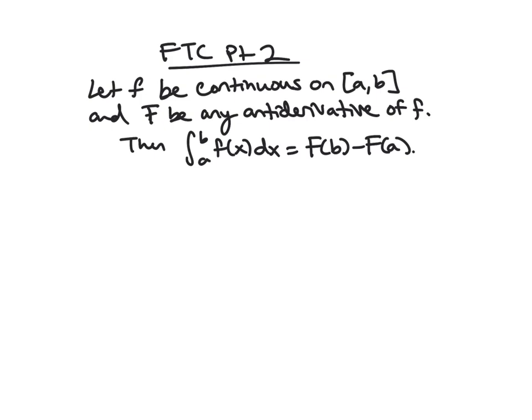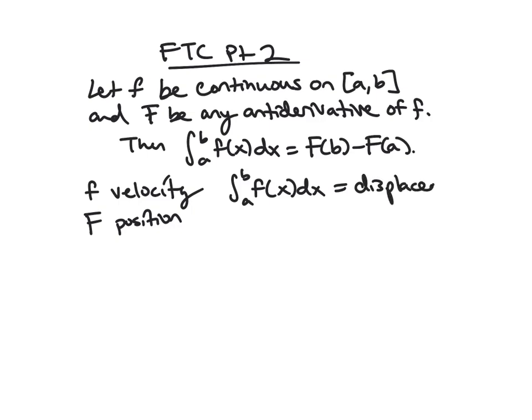To give some intuition for why this should make sense: what if f is a velocity function? We know the antiderivative of velocity should be position. If we take the definite integral or area under the curve of velocity, this should give us displacement. And that corresponds to F(b) minus F(a), which is your end position minus your initial position - exactly displacement. These things match up.